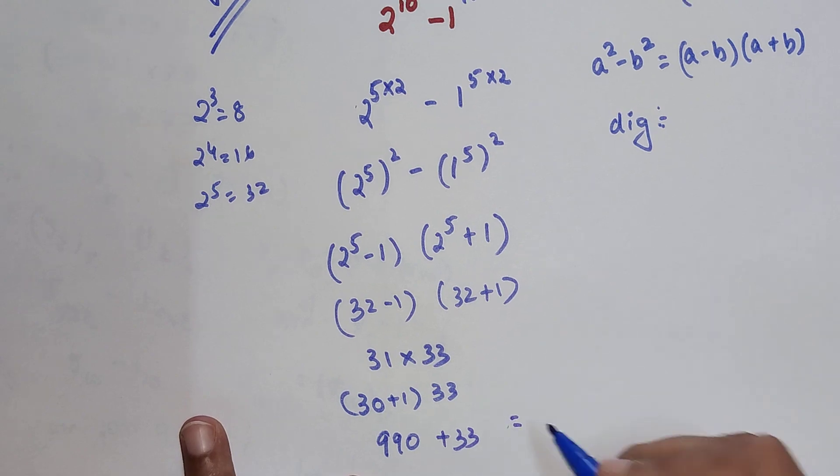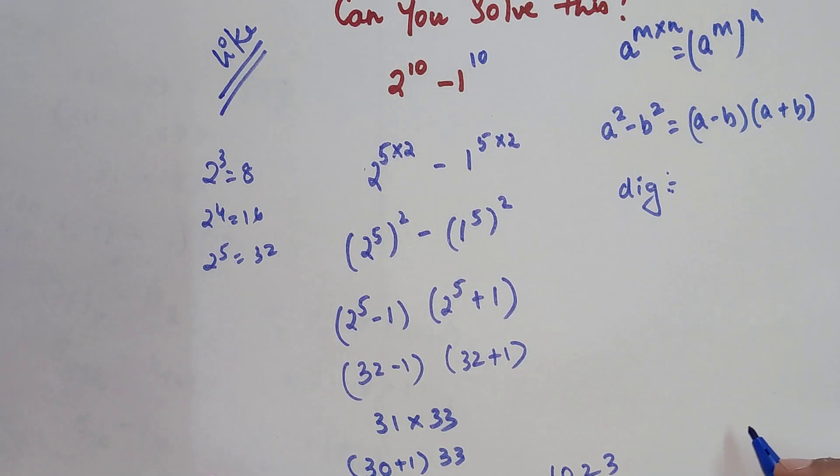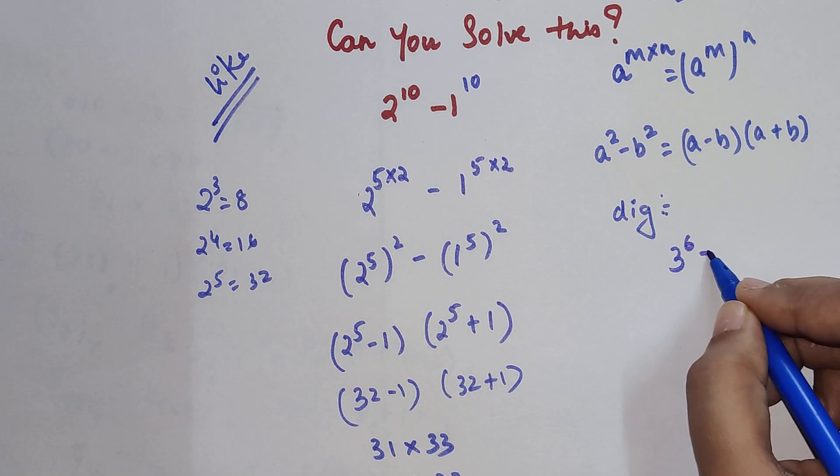So that gets you basically your answer is coming out to be 1023. This is your answer for this particular question, and coming to your DIY, I want you to tell me what is 3 raised to 6 minus 1.